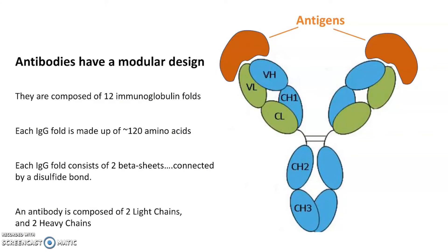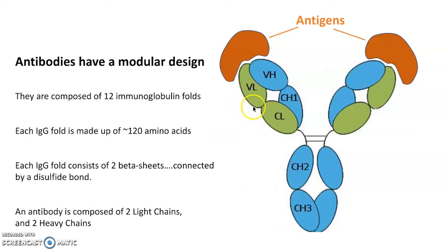I've been talking about the structure of an antibody using models, but now I want to show you four slides found in Google images that basically tell you the same thing. This is going to be redundant to what I've just said using models, so if you're comfortable with all of this, you don't have to worry about going through this part of the video. Here's an image slightly modified from what I found on the web. I like this one because it very clearly shows the modular nature of an antibody. Each one of these ovals represents an immunoglobulin fold. Here's a light chain made up of two folds. VL stands for the variable region of a light chain.